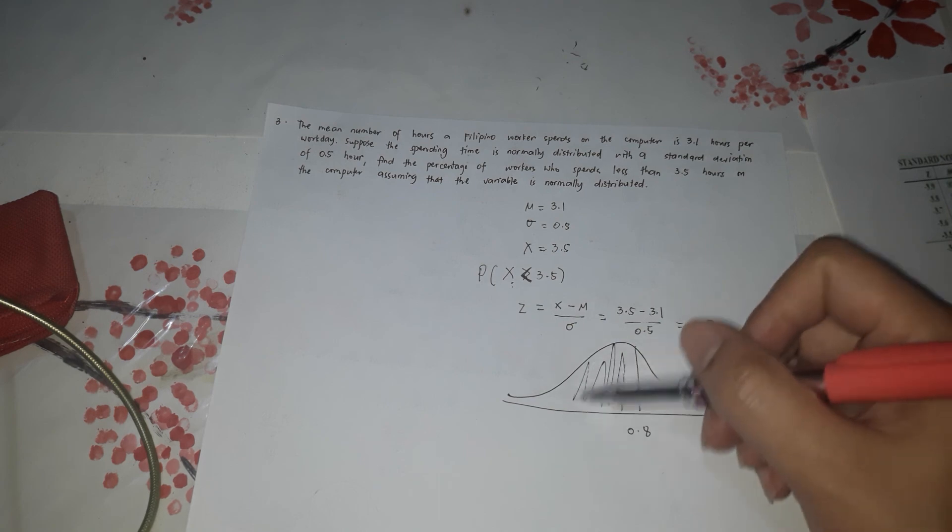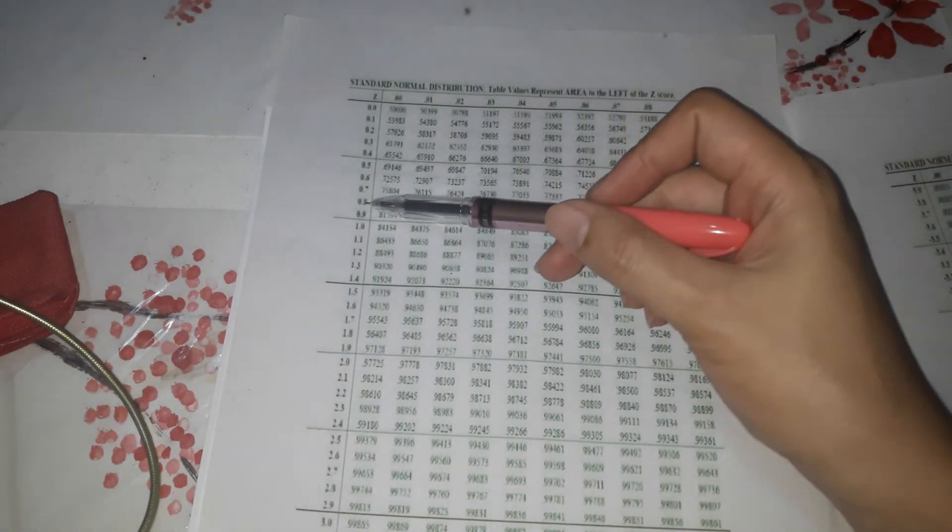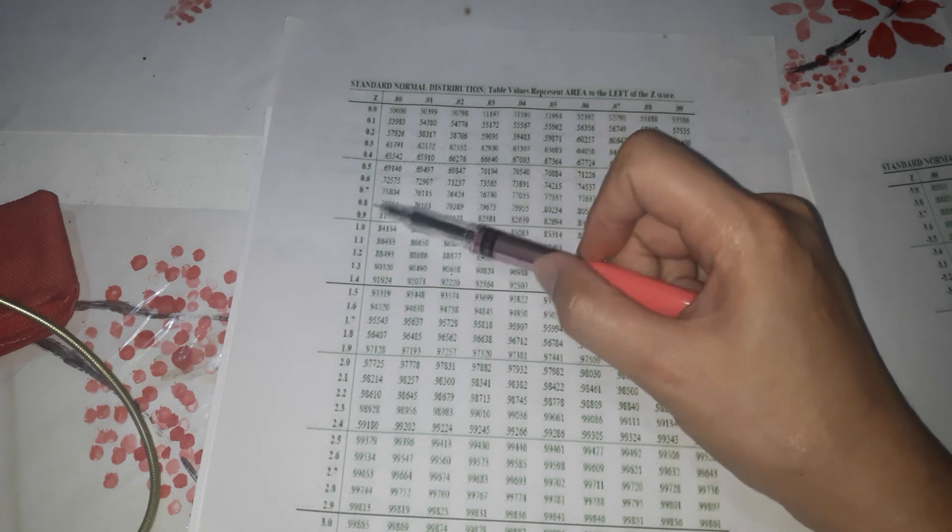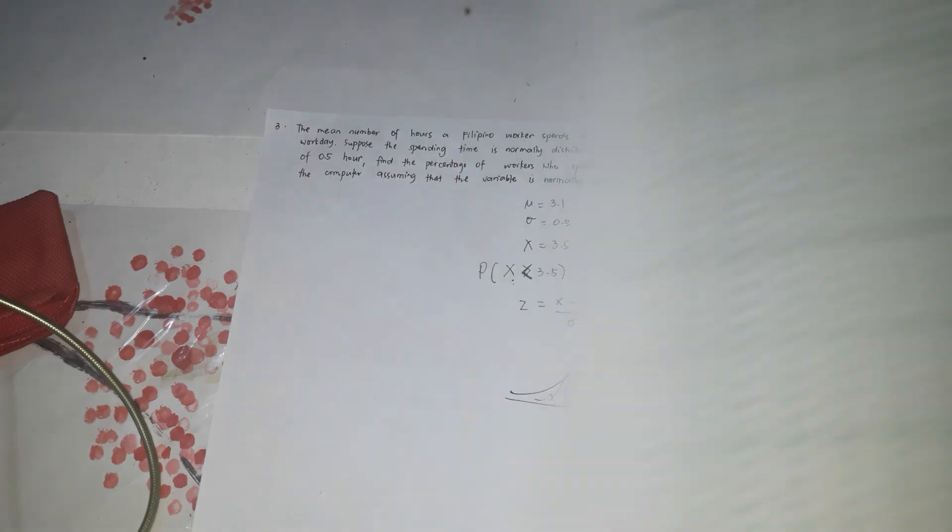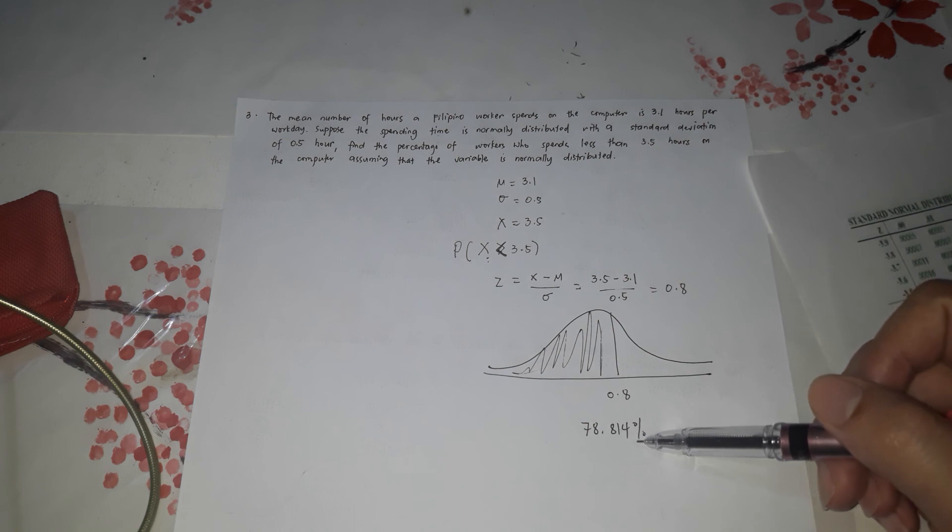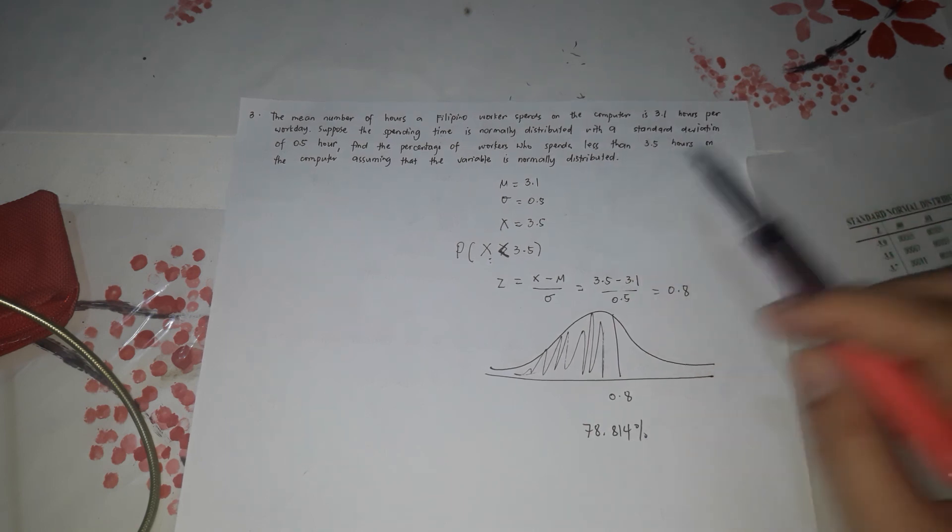So the z score is 0.8. So curve 0.8 less than. So here to the left. So because it's 0.8 only. So that's the answer. It basically became 78.814% spent less than 3.5 hours on computer. So that's the answer. Thank you.